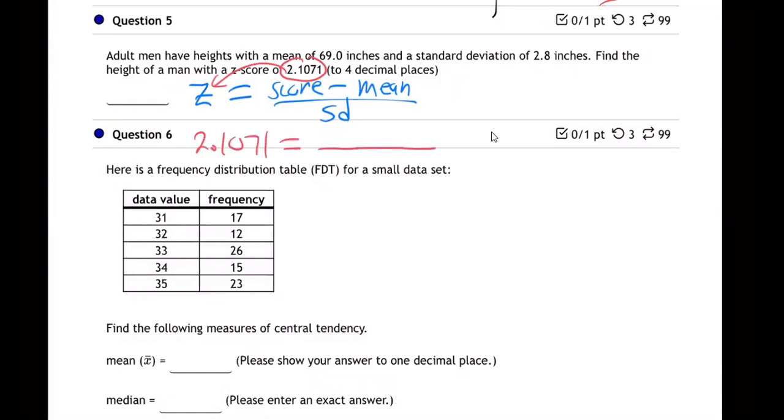And on the other side, the mean, it tells me the mean is 69, so that's 69.0, so that goes right there. The standard deviation is 2.8, that goes right there. What's the score? I don't know the score, right, call that x.